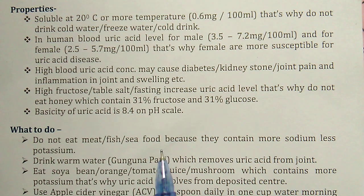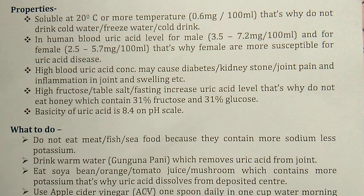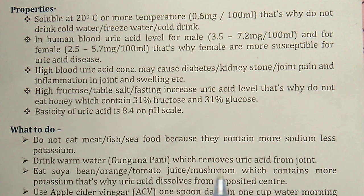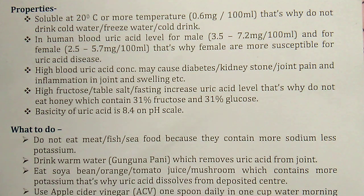To increase uric acid elimination from the body, eat soybean, orange, tomato juice, and mushroom, which contain more potassium. High potassium content helps dissolve uric acid from its deposited sites.